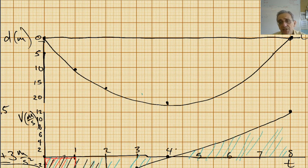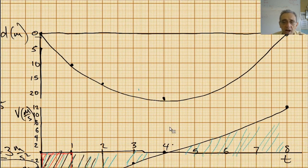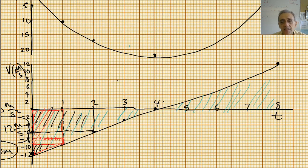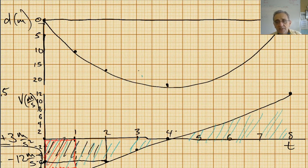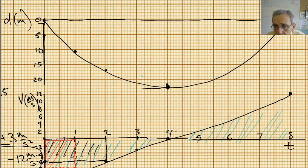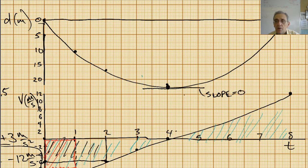Another thing we can do to verify is: instead of going up from A to V to D using areas, what if we take a point on the d-t graph and calculate the tangent at that point? If I draw a tangent here at the minimum, it would look like that. A horizontal line has a slope of zero, so the slope of this line equals zero. That means at this point — going down to the v-t graph at four seconds — our value is zero.